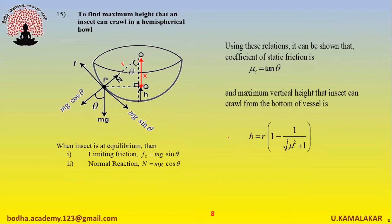An insect is in a hemispherical bowl and tries to crawl up the hemisphere. It will crawl to a certain height h and then fall back. When the insect is at equilibrium at point P, the limiting friction F_L equals mg sin(theta) and normal reaction N equals mg cos(theta). The maximum vertical height the insect can crawl from the bottom of the hemispherical bowl is: h equals R times (1 minus 1 divided by the square root of (mu squared plus 1)), where R is the radius of the hemispherical bowl and mu is the coefficient of friction.